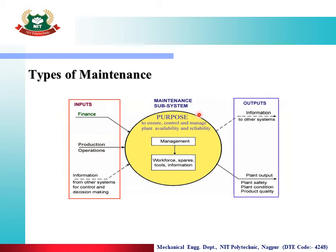The purpose of maintenance is to ensure, control, and manage plant availability and reliability. We need to ensure and control the system, manage the plant based on its availability, and keep it reliable — that is nothing but the management of workforce, spares, tools, and information. While converting any input to output, we achieve the process through maintenance. If we do not maintain the power plant, we will lose the availability and reliability of the plant permanently. So maintenance is one of the most important terms in all industries — production, manufacturing, and power generation.